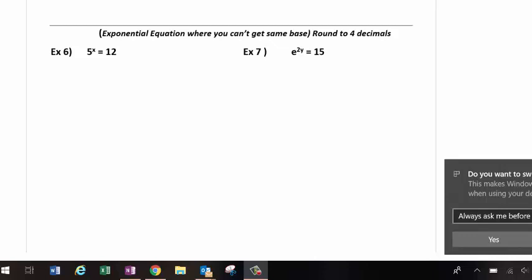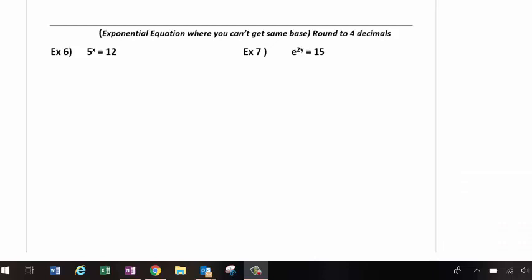The reason why we'll know we have to on these problems is these are exponential equations where you cannot get the same base on both sides. That's always your first goal. So on number 6 I can't get a base of 5 on both sides. So if I can't get that base I'm going to take the natural log of both sides. As long as I perform the same piece on both sides I'm okay.